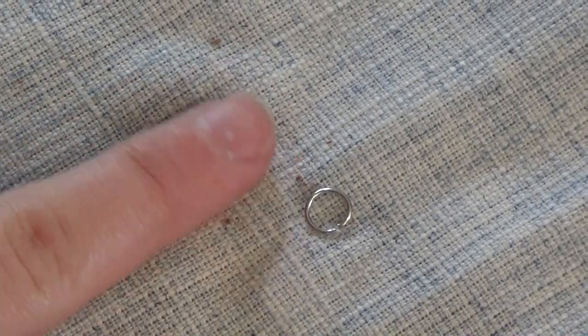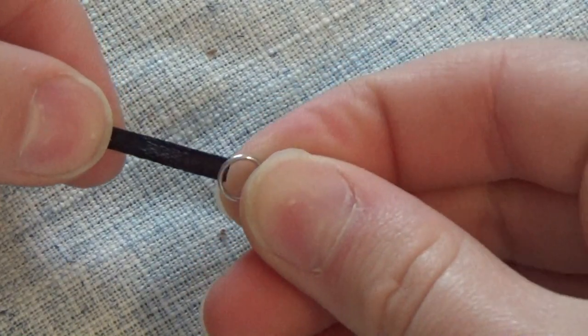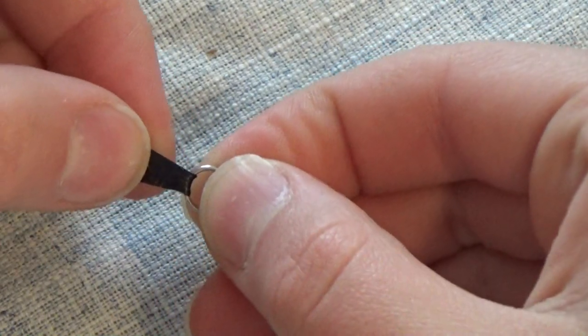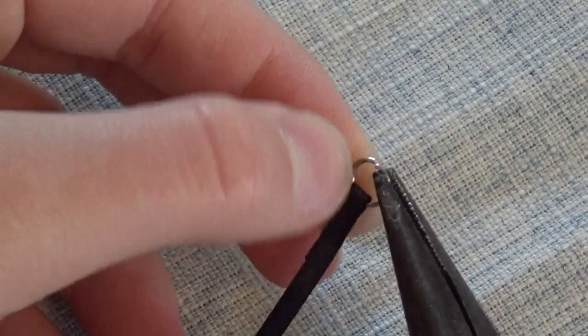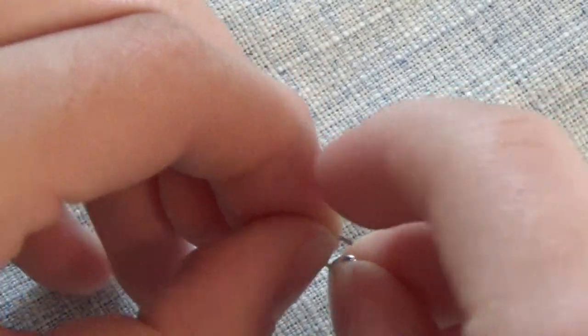So for the lunge line, I'm using a big and a small jump ring. If you only have one size, that's fine, and a lobster clasp. So I'm going to start by gluing the larger jump ring to a piece of ribbon. Then I'm going to open that and put in a piece of chain. So I just have this old chain from a piece of jewelry.